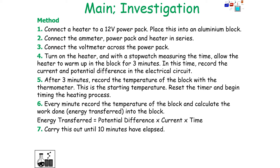During the warm-up time, record the current and the potential difference in the circuit. After 3 minutes, record the temperature of the block with a thermometer — that's our starting temperature. Reset the timer and begin the timing and heating process. Every minute, record the temperature of the block and calculate the work done into the block, where energy is equal to potential difference × current × time.